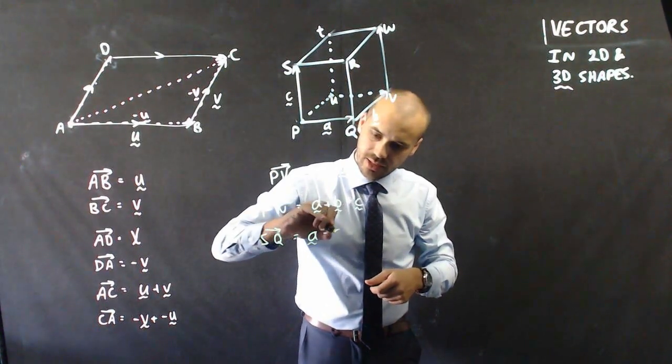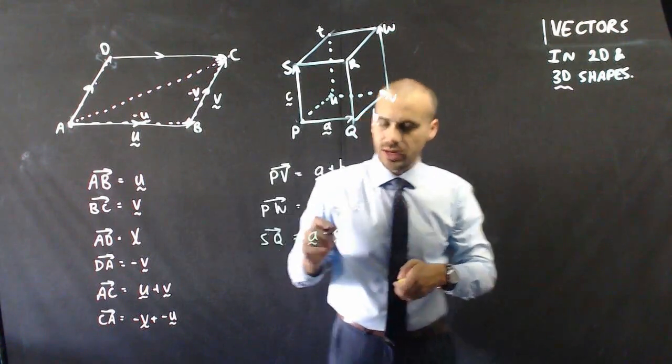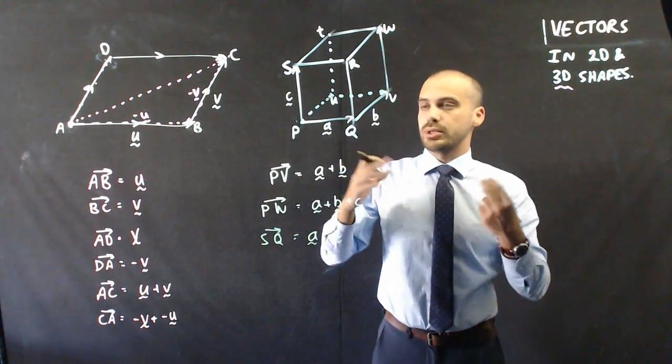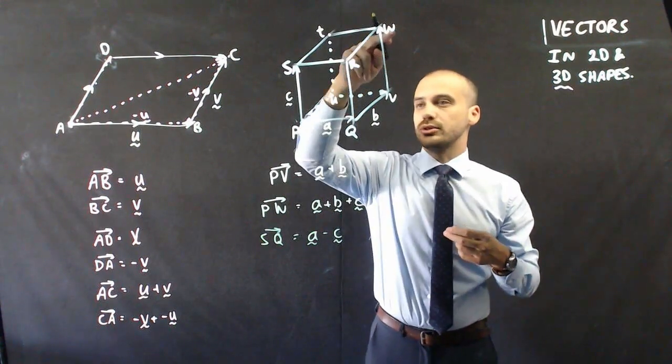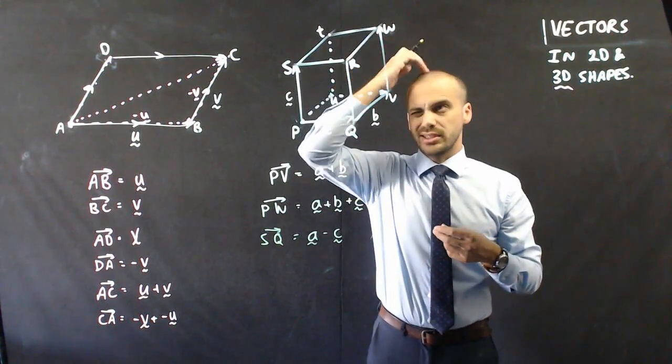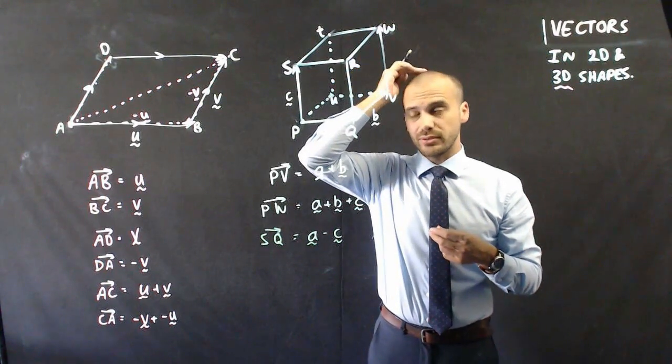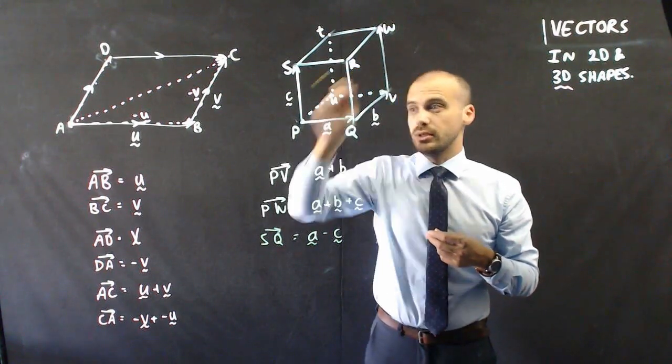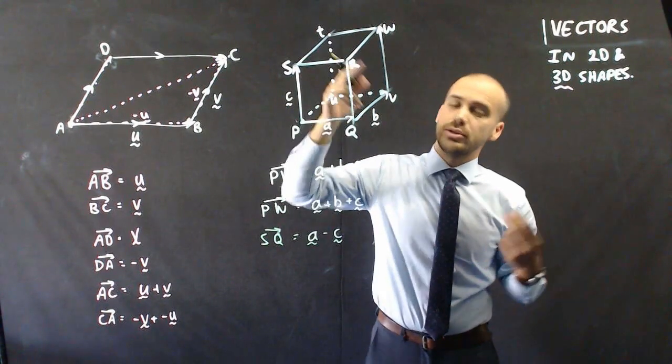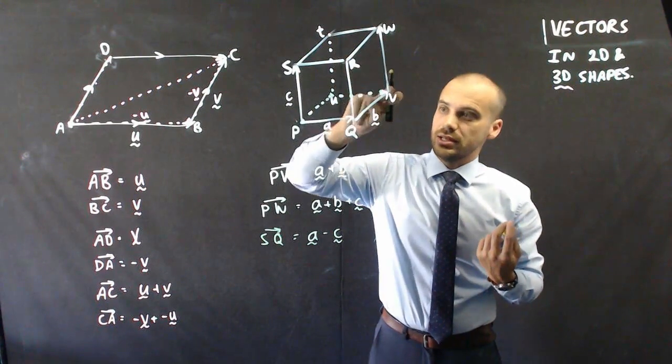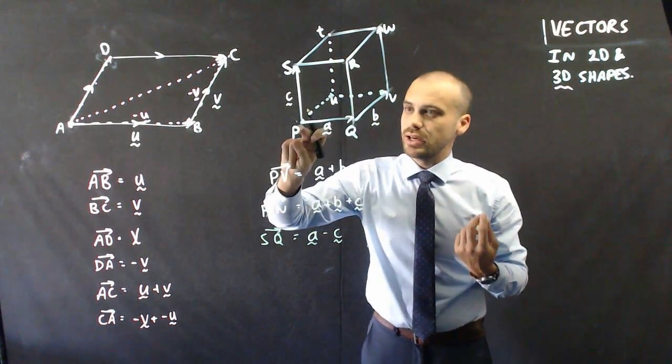And we can do this in all manner of ways. Let's go from w to, let's say from w to p. That's all negatives. From w to p would be all negatives: negative c, negative b, negative a.